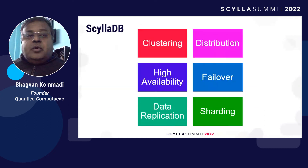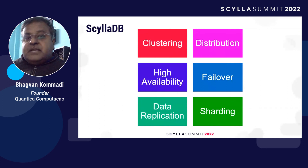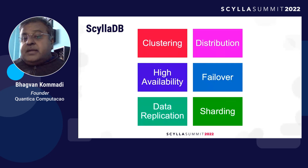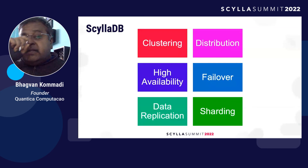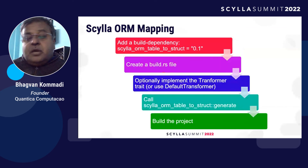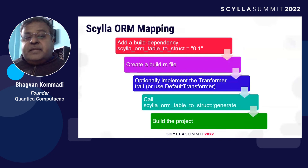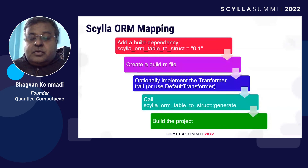Now that we've looked at the Scylla ORM and Rust driver, why is ScyllaDB so popular? It has great features for clustering and can support distributed databases. It has features for high availability, failover, data replication, and sharding. In NoSQL, sharding allows partitioning based on category or various indexes across the database. For ORM mapping, you add a build dependency, create a build.rs file, implement the transformer trait or use the default transformer, and call the Scylla ORM table to start generating code — then build the project and the code gets generated automatically.